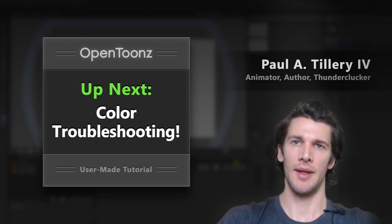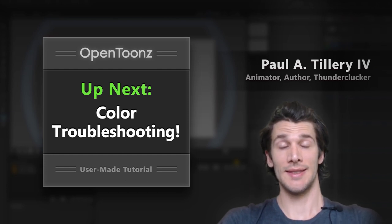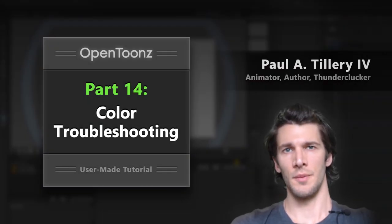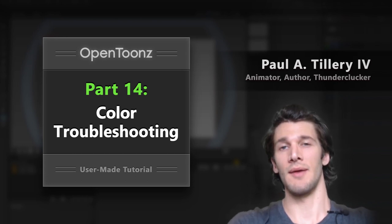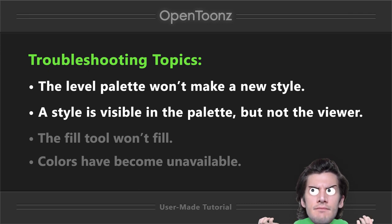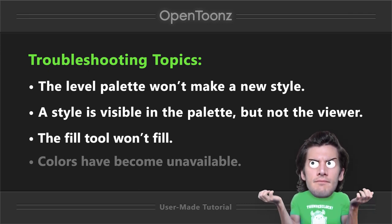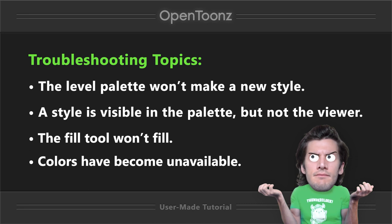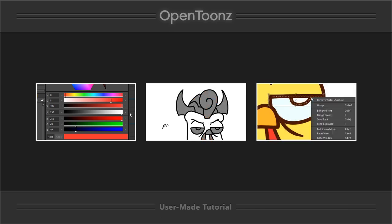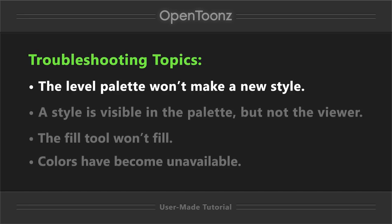That max gap setting will come into play in our next section on color troubleshooting. The most common issues I've encountered are: when the level palette won't make a new style; when a new style is visible in the palette but not in the viewer; when the fill tool doesn't fill; and finally, when colors seem to just vanish from the level palette. For some of these we'll do a little recap, for some we'll show new techniques, and for some we'll even see some odd behavior in the program. Let's start from the top of this list with the level palette not making a new style.